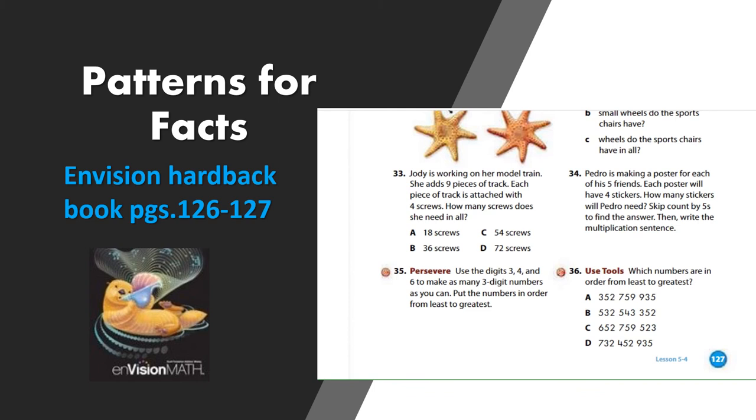And for 35, use the digits three, four, and six to make as many three digit numbers as you can. Then put these numbers in order from least to greatest. So this is a two step problem. You're going to use the numbers three, four, and six to make or create three digit numbers. So for example, I could use the three, four, and six to make the number 436. Then I could also use those same three digits and move those digits around in their place values to create another number, maybe 643. Once you have created as many numbers as you can, then you're going to take those numbers and put them in order from the smallest, which is the least to the greatest.